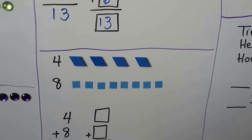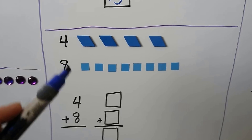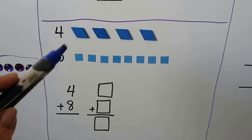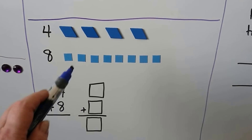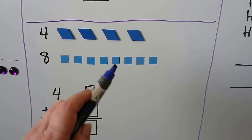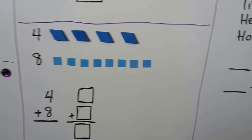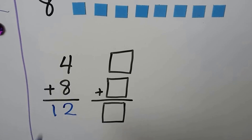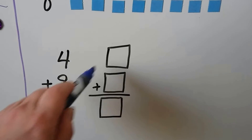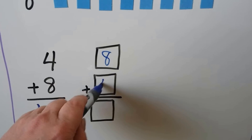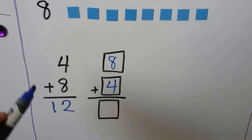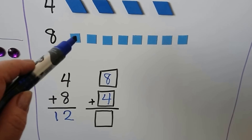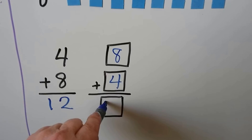Here we have 4 rhombuses and 8 squares. We have 4 plus 8 — that's 1, 2, 3, 4, 5, 6, 7, 8, 9, 10, 11, 12 — 12 shapes. 4 plus 8 is equal to 12. We can change the order of the addends and put the 8 on top and the 4 underneath it. We haven't taken any shapes away or added any, so it's still the same number. It's still 12. So 8 plus 4 is 12.